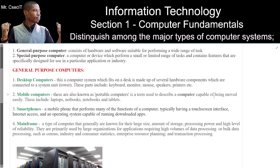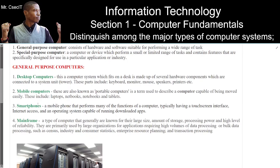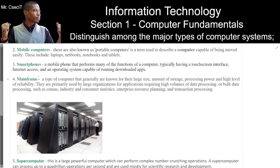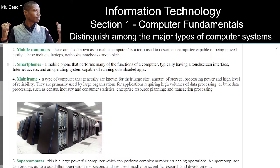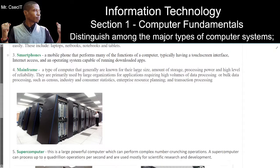Mobile computers include laptops, notebooks, and tablets. Number three: smartphones — a mobile phone that performs many of the functions of a computer, typically having a touch screen interface, internet access, and an operating system capable of running downloaded apps. Number four: mainframe.